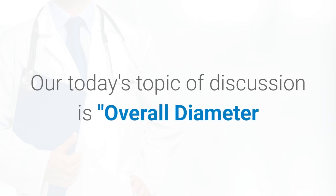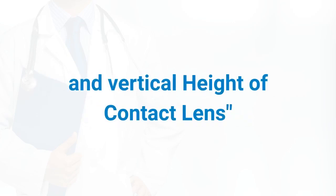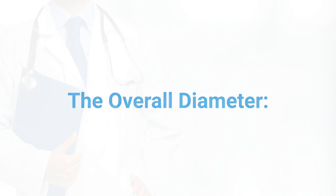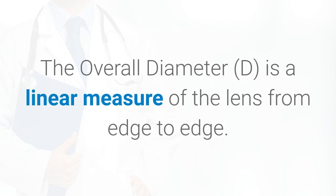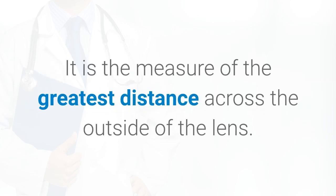Today's topic of discussion is the overall diameter and vertical height of contact lenses. The overall diameter D is a linear measure of the lens from edge to edge — it is the measure of the greatest distance across the outside of the lens.